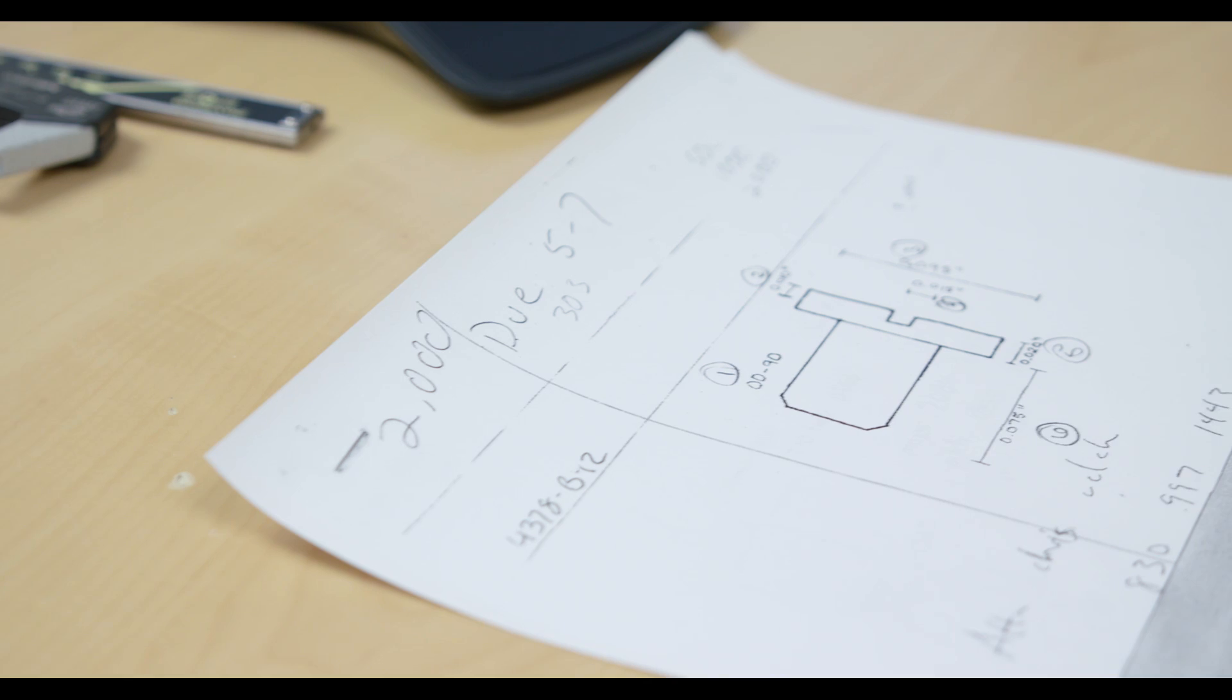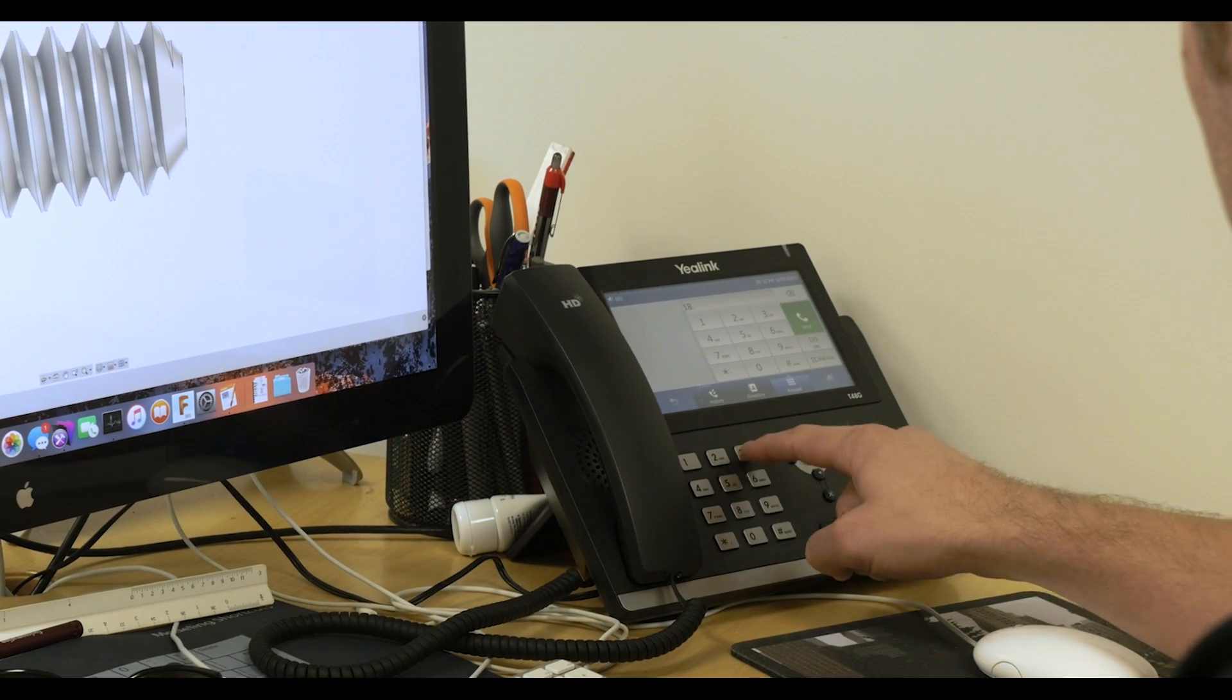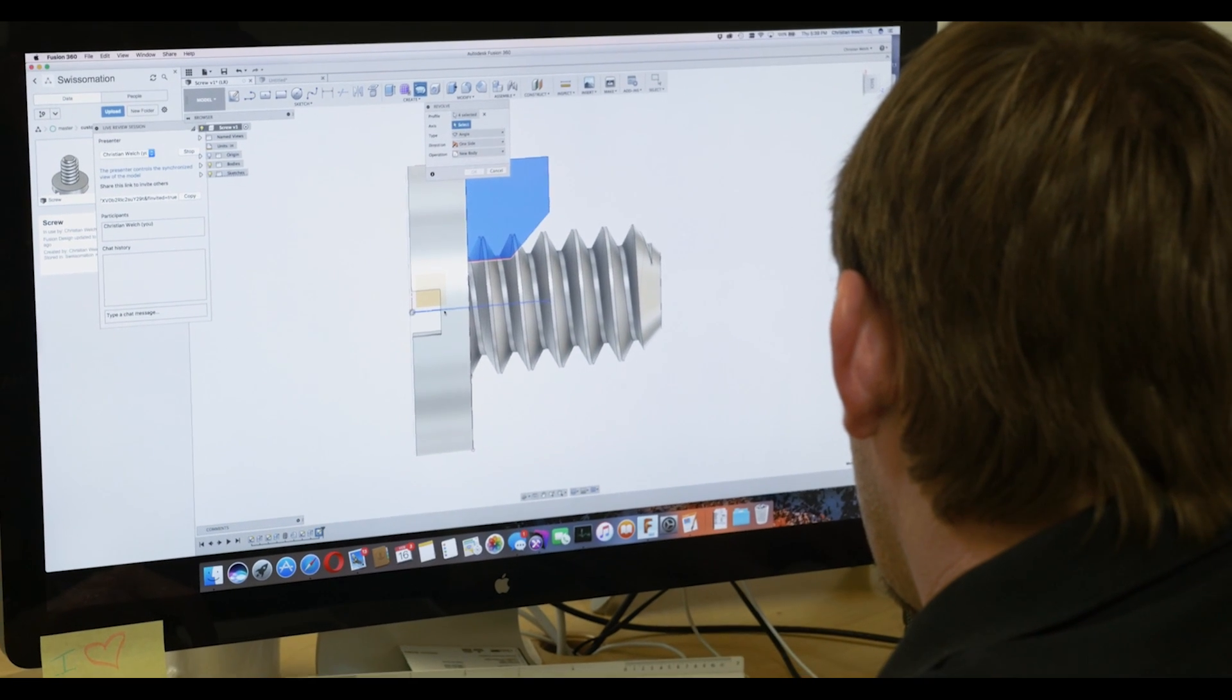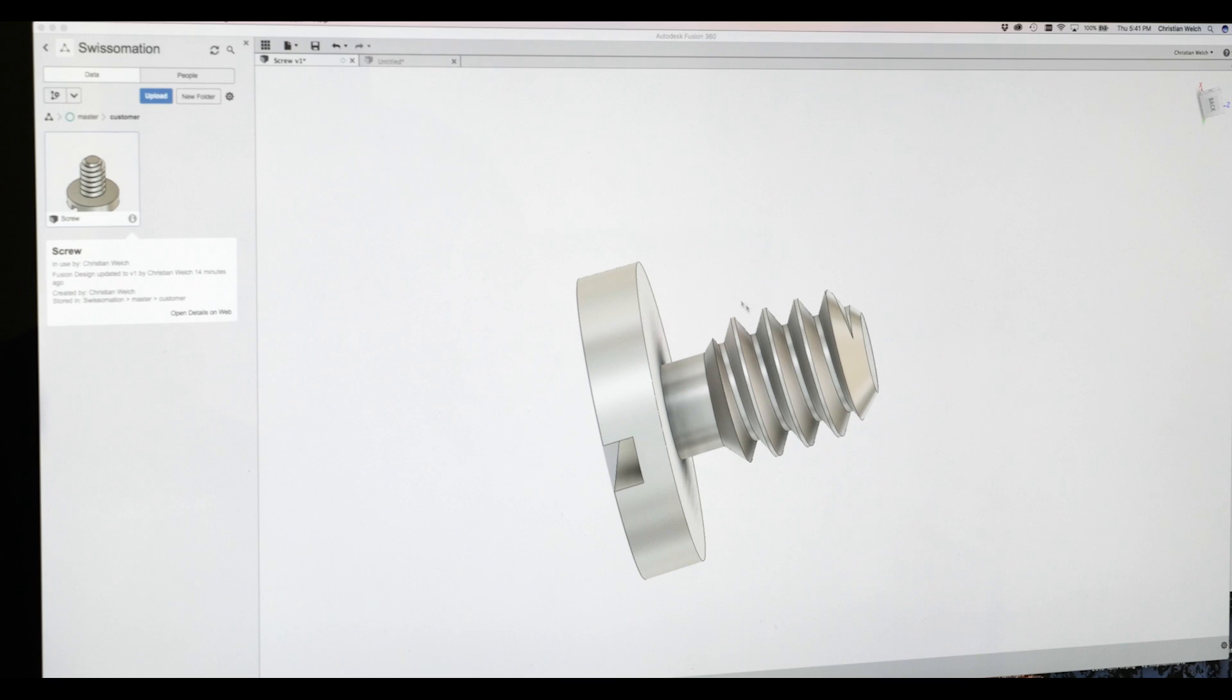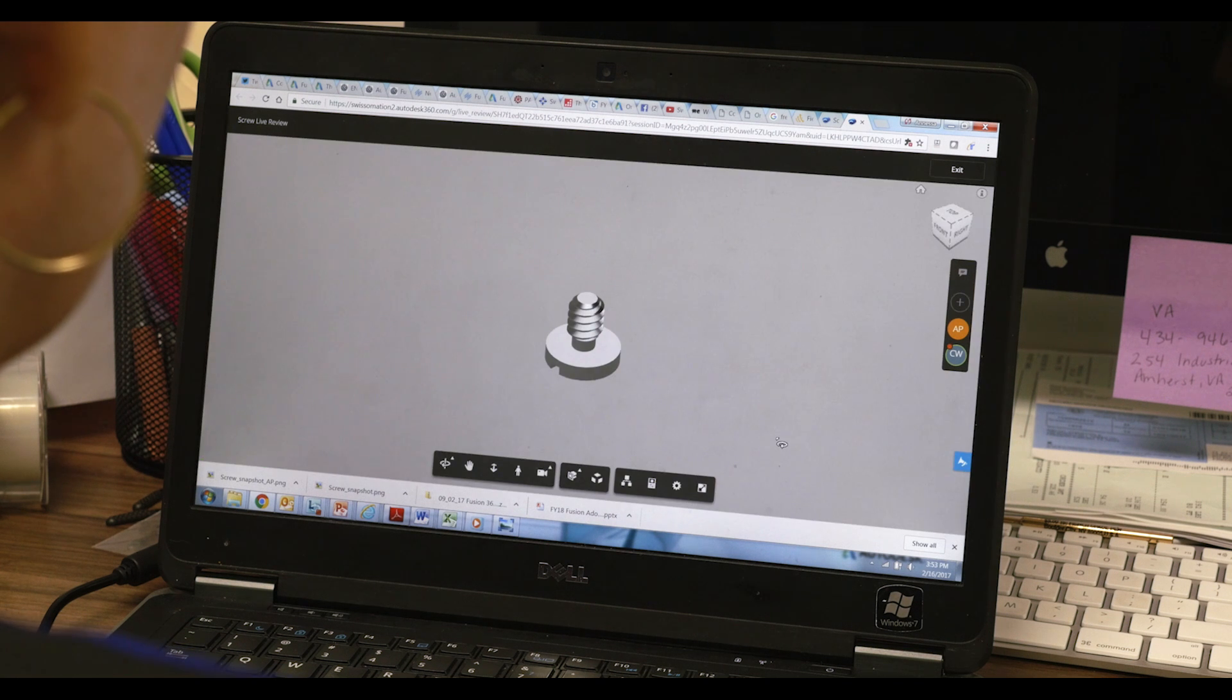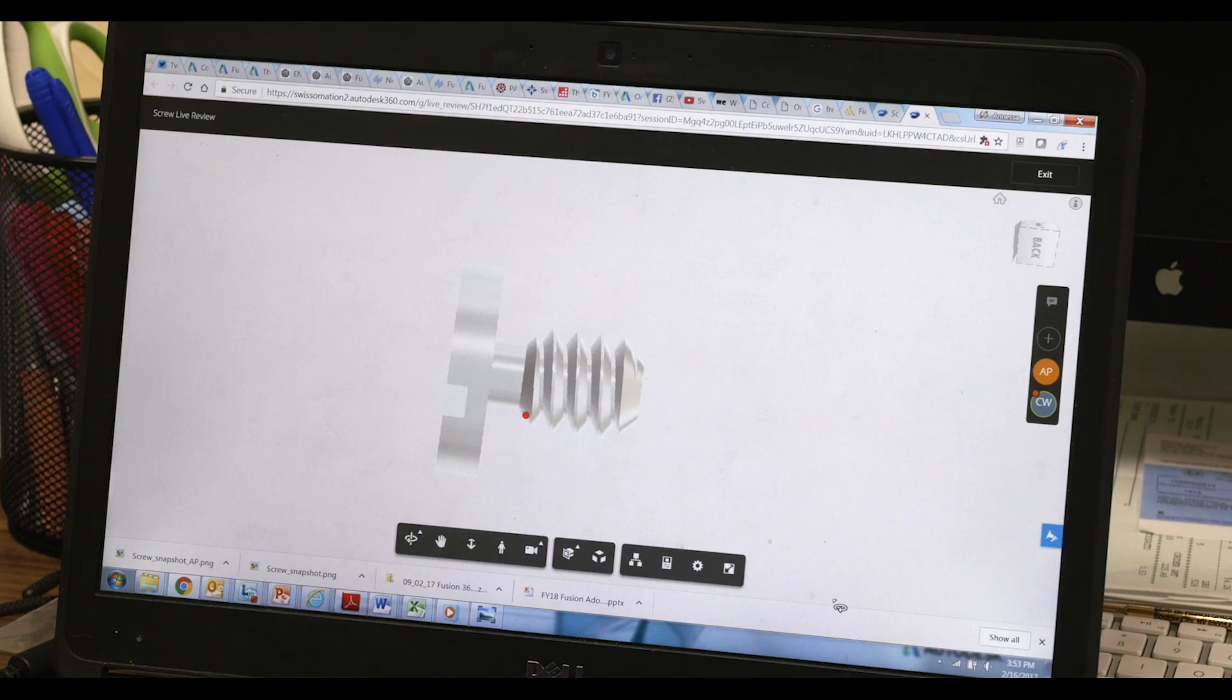Many of our customers, when they contact us, will have a drawing. That's where we use software like Fusion 360 to collaborate with them on changes that need to be made for manufacturing. We'll use the live review functions of Fusion 360 in that process. We can send them a simple link. They just click on the link. It launches a browser. There's no software to install. Our customers absolutely love the capabilities that we have now.